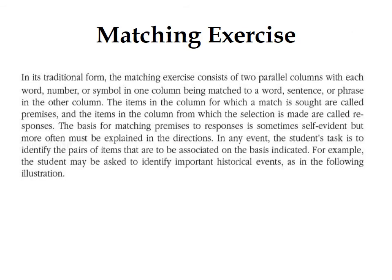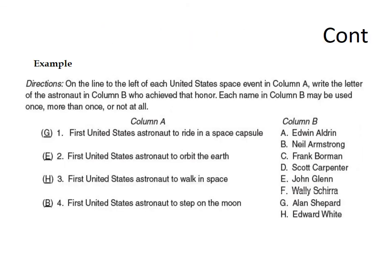The third type of objective test item is matching exercises. Matching exercises consist of two parallel columns where each word, number, or symbol in one column is matched to a word, sentence, or phrase in the other column. The items in the column for which a match is sought are called premises, and the items from which the selection is made are called responses. The student's task is to identify the pairs of items to be associated on the indicated basis — for example, matching important historical events.